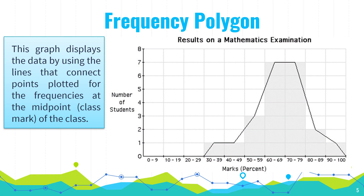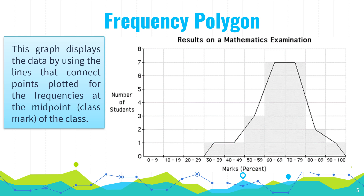The second statistical graph is the frequency polygon. This graph displays the data by using lines that connect the points plotted for the frequencies at the midpoint, or class mark, of each class. So remember, if you will do a frequency polygon, you need to determine the midpoint or class mark of the classes. To create the frequency polygon, we first need to determine the class marks. You can create a formula in Excel — for example, equals (21 plus 25) divided by 2.